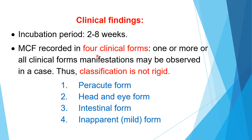Malignant Cataral Fever has 4 clinical forms. An important point is that one or more, or all clinical manifestations may be observed in one case — symptoms of one form may overlap with another. The four forms are: first, the per-acute form; second, the head and eye form; third, the intestinal form; and fourth, the inapparent or mild form.